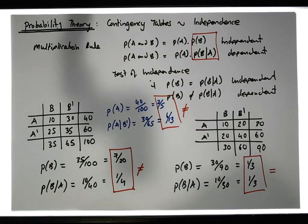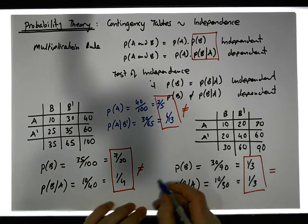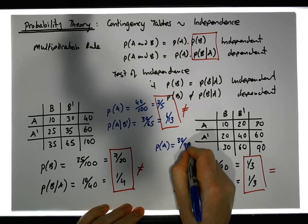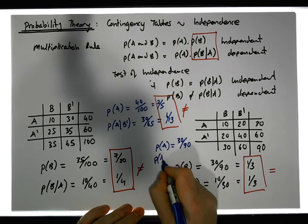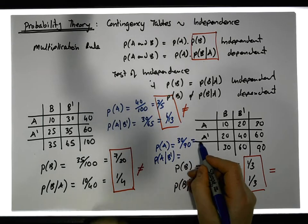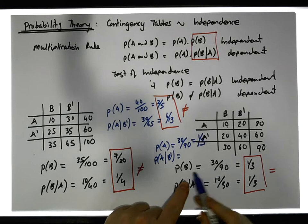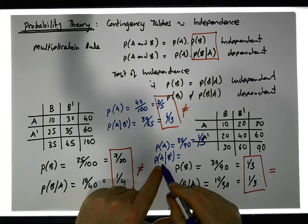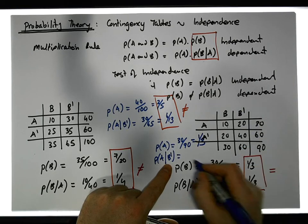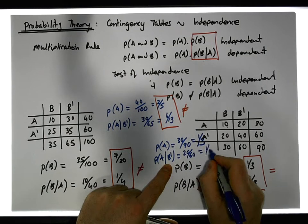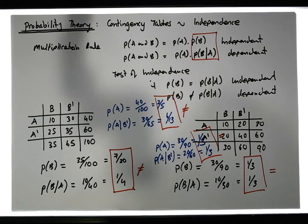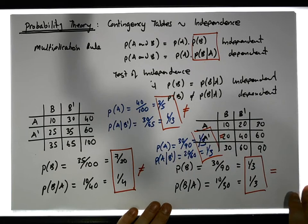Now back to this situation. The probability of A happening is 30 chances out of 90 — that's 1 in 3. And the probability of A knowing that B prime has happened: B prime is in this column here, and we've got 20 chances out of 60, which gives us 1 in 3 again. Once again we have equality between P(A) and P(A|B'), and hence in this situation we have independence.